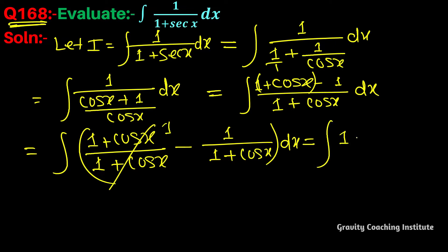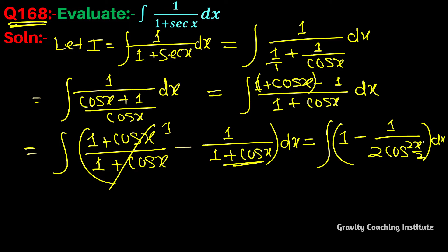The formula for 1+cos x is 2cos²(x/2). So we have integration of 1 minus 1/(2cos²(x/2)) dx, and 1/cos can be written as sec, giving us 1 minus (1/2)sec²(x/2).